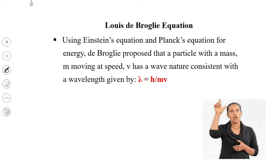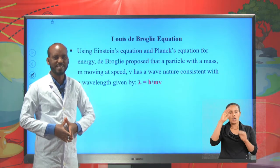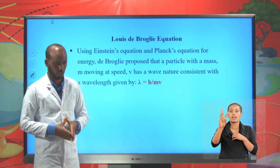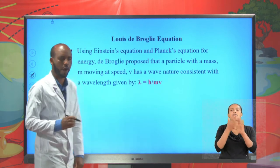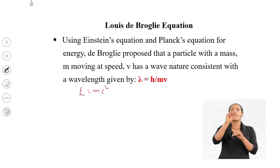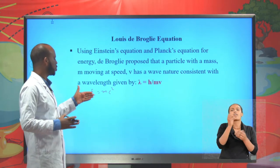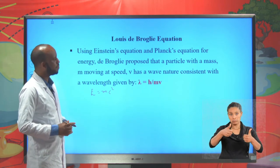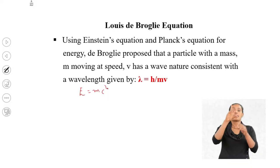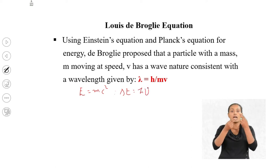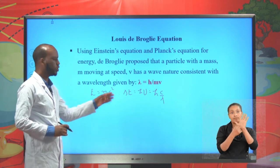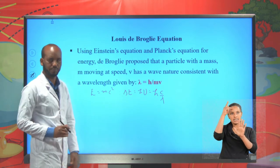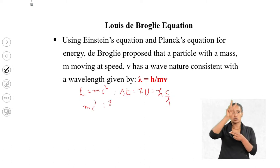The de Broglie equation enables us to calculate wavelengths of particles. Using Einstein's equation, E = mc², the significance of this equation is that energy has mass. Planck's equation for energy: ΔE = h × frequency = hc / λ. We can equate the two equations: mc² = hc / λ. Cancelling c from both sides gives λ = h / (mc).